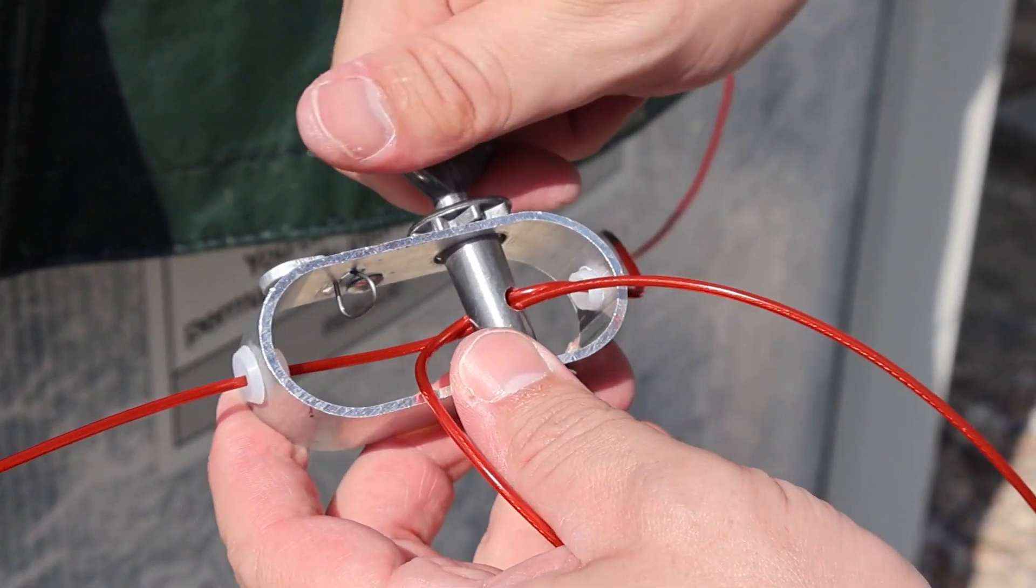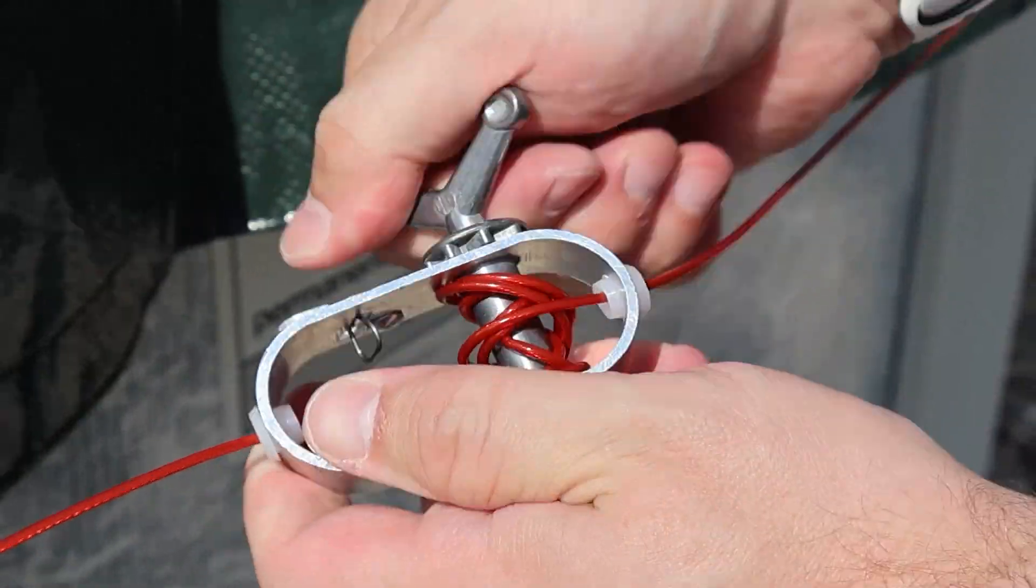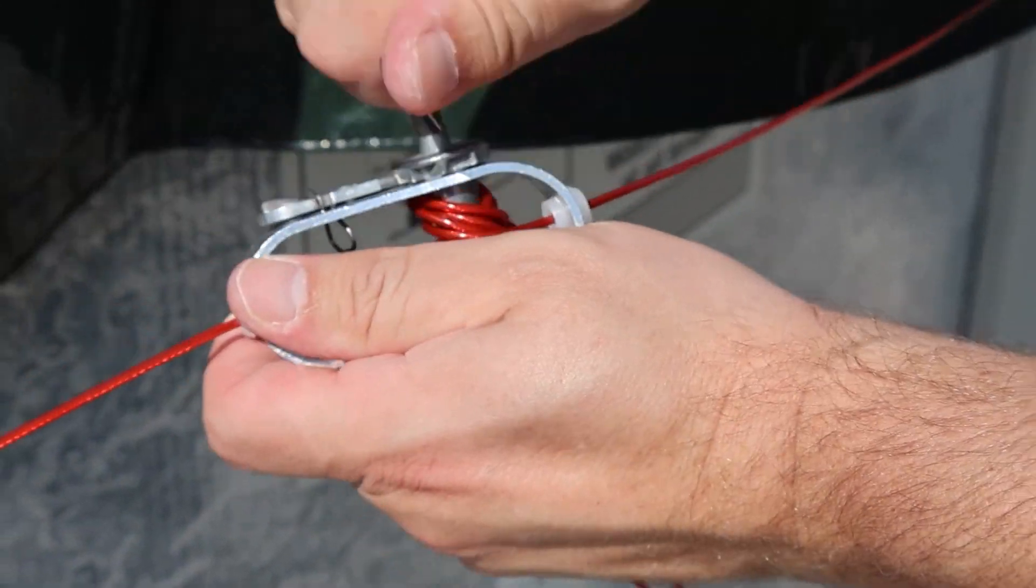Pull the cable so that they are taut and begin turning the crank located on the outside of the winch. Continue to crank until the cable cannot be easily pulled away from the cover.